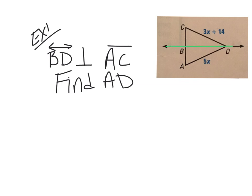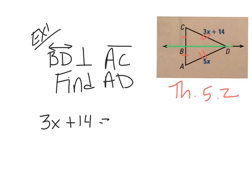So what does that tell us about these measurements? If it bisects this segment directly in the middle, this line equals this line — CB equals BA. Also, CD equals DA. The perpendicular bisector theorem, Theorem 5.2, proves that. So if we know those two segments equal each other, we set them equal to solve for x: 3x + 14 = 5x.